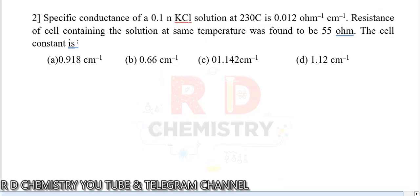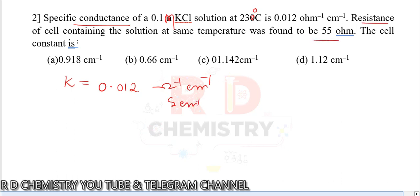Question 2. Specific conductance kappa of 0.1 molar KCl at 23 degrees centigrade is given. Kappa equals 0.012 ohm inverse centimeter inverse, that is Siemen centimeter inverse. Resistance R is equal to 55 ohms.